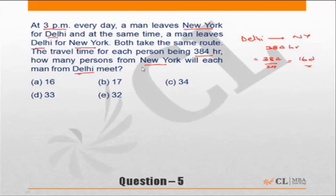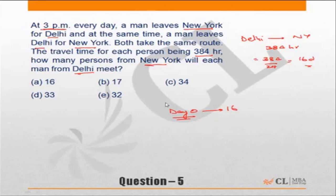Every day at 3 p.m. a person is leaving New York for Delhi. So if I'm starting from Delhi, I'm going to meet some of those people. Let's say today is day zero. Any person who starts from today for the next 16 days — I should be meeting each one of them on the way. Similarly, any person who starts for the next 16 days will be meeting me on the way.